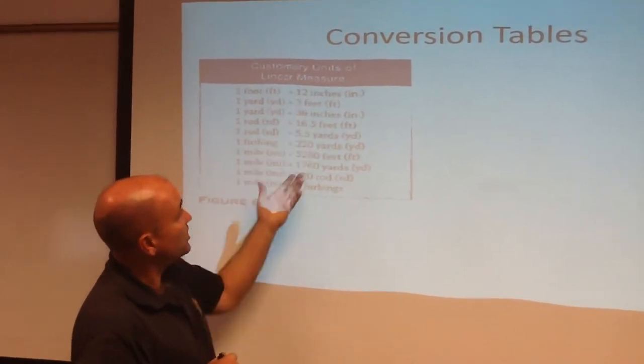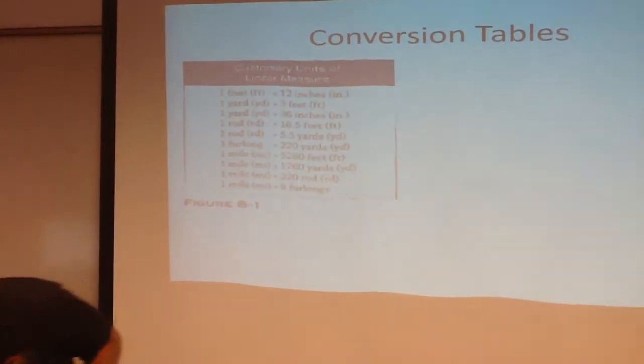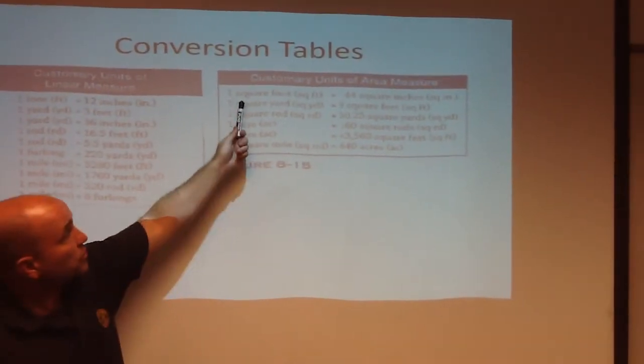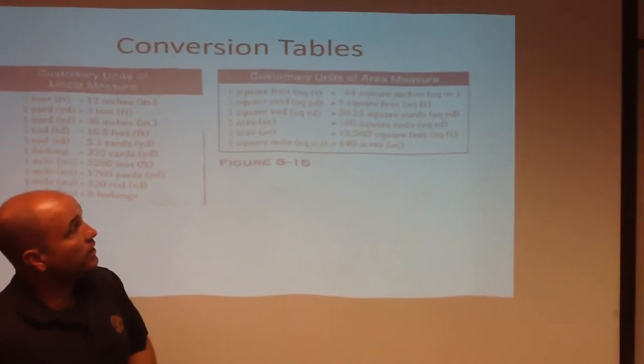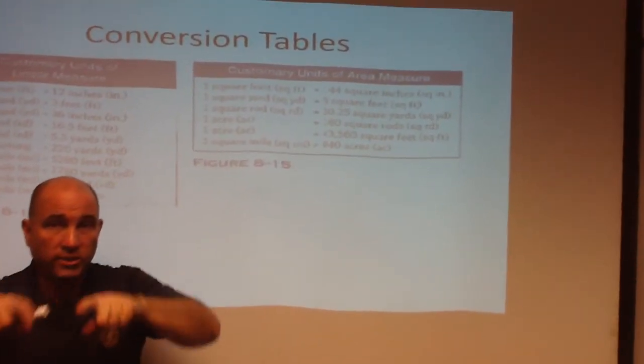And we don't just have, this is what's called linear measurement, which is just distance. We could also have other types of measurement, like square units. And what happens with square units is you have a square foot, not just a foot. A square foot has this.